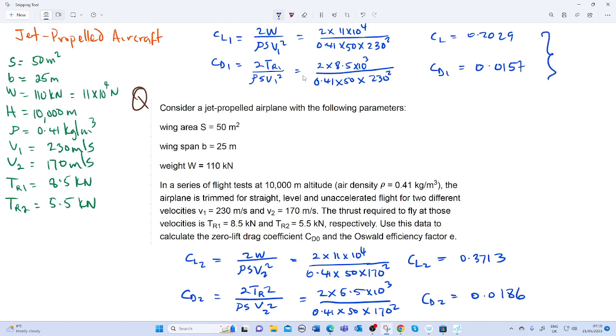Now that we have found both CL and CD on the two events of the aircraft flight, the next thing we need to proceed on is how we can calculate our Oswald factor and our zero lift drag coefficient CD0.